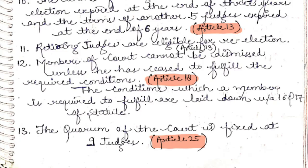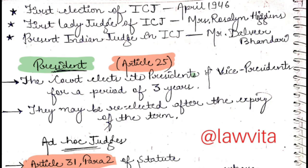Point 13: the quorum of the court is fixed at 9 judges, per Article 25. That completes the composition section. Some additional facts: the first election of the ICJ was in April 1946.